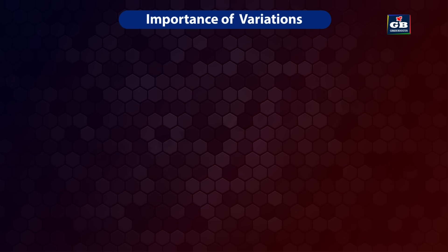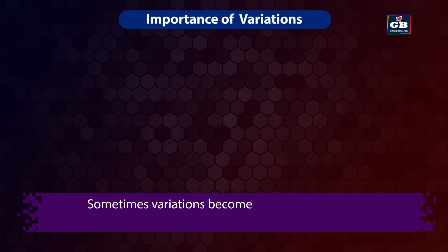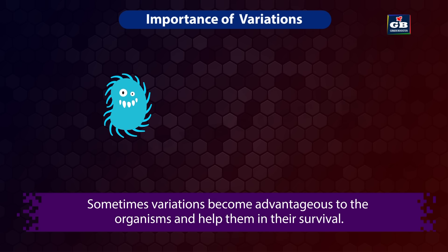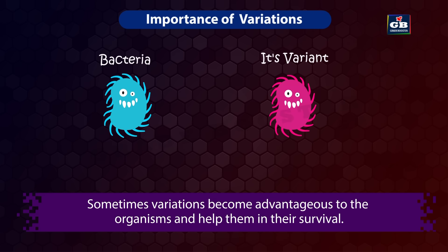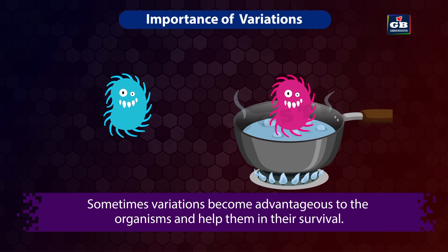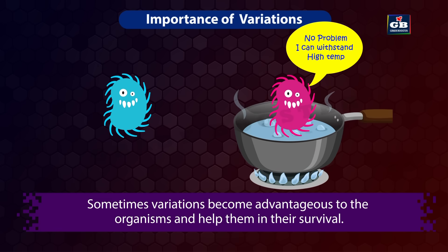Sometimes variations become advantageous to organisms and help them in their survival. For example, a variant of bacteria that can withstand high temperature — this variation helps it to survive better during a heat wave.